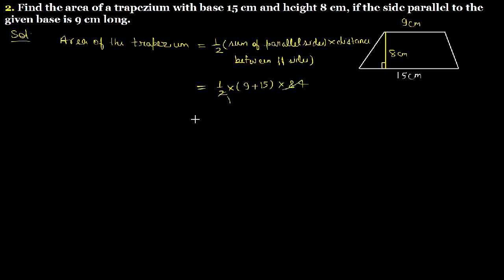2 into 2 and 2 into 8. 15 and 9 is 24. 24 multiplied by 4 means 4 times 4 is 16, so 96 cm².